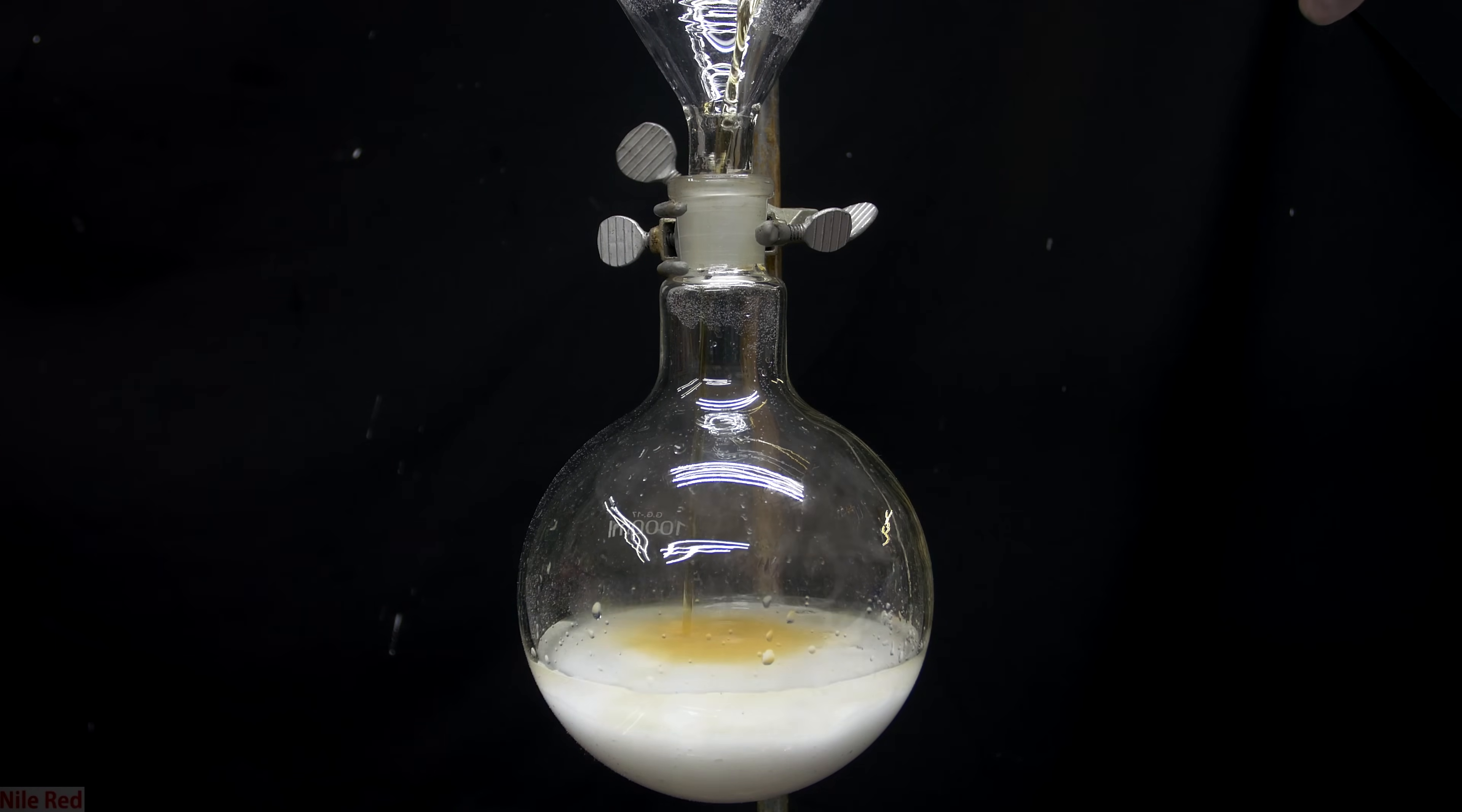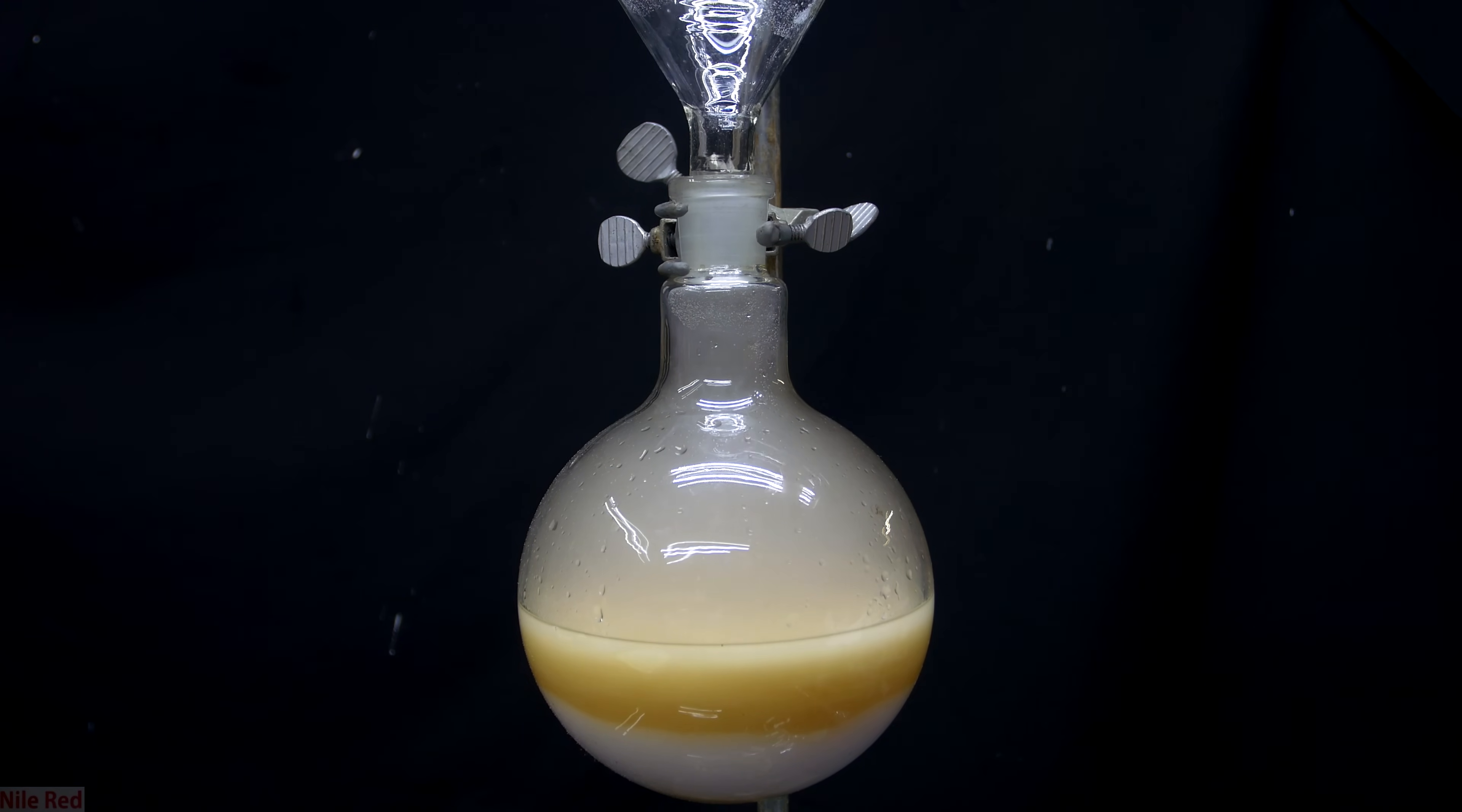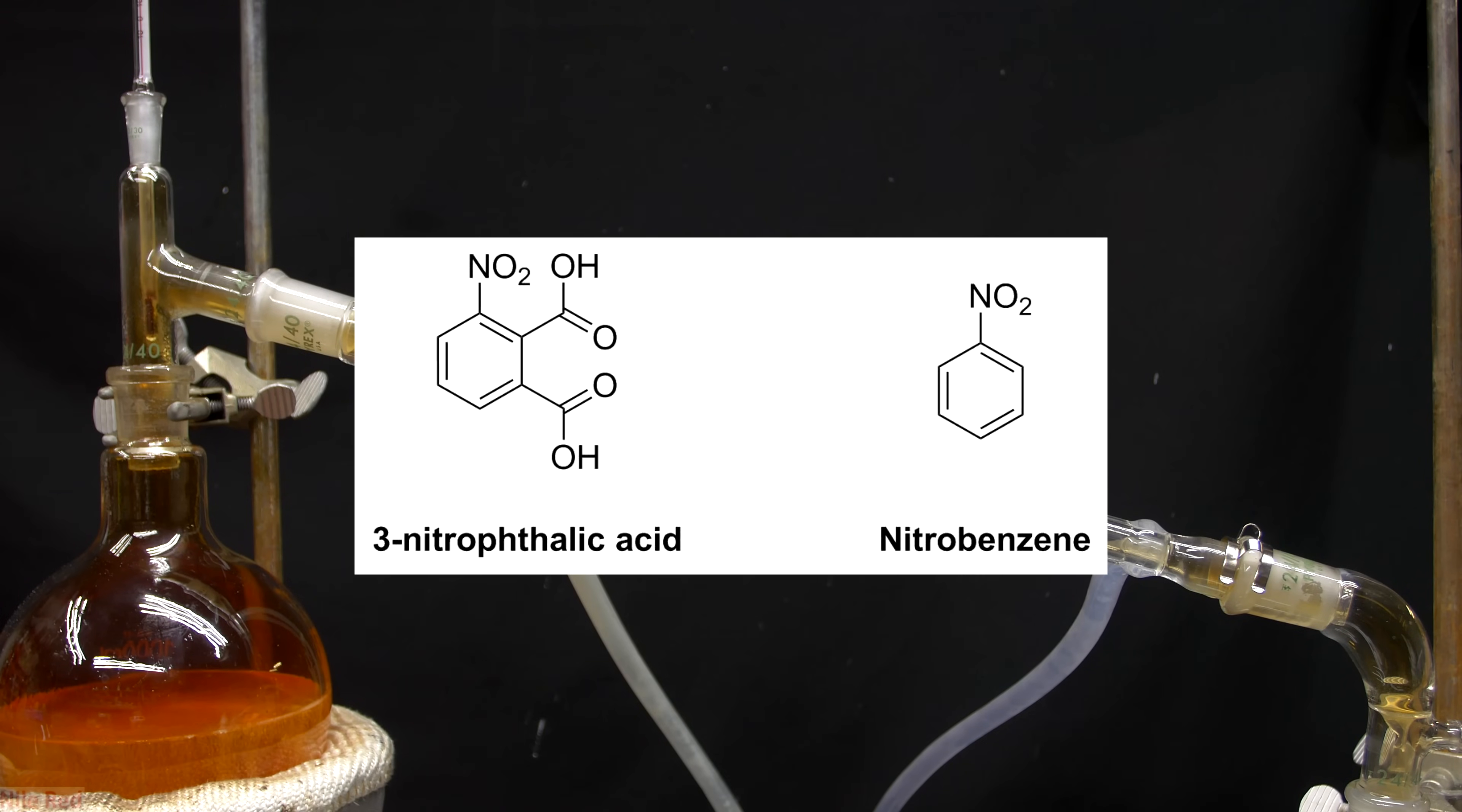Today we're going to be making a little bit of azeotropic nitric acid. The nitric acid that you find in a lab is generally just the azeotropic type, and this just means that it can't be purified or made stronger by distillation.